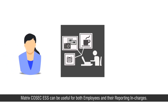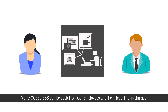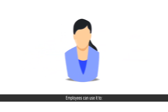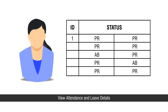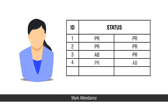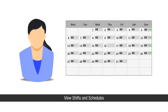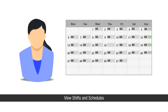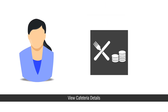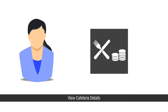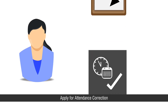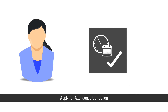COSEC ESS can be useful for both employees and their reporting in charges. Employees can use it to view attendance and leave details, mark attendance, view shifts and schedules, pre-register visitors, view cafeteria details, apply for leave or tour, apply for attendance correction, and edit personal information.